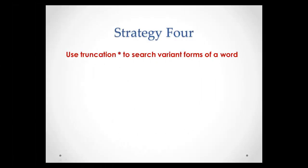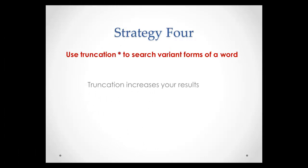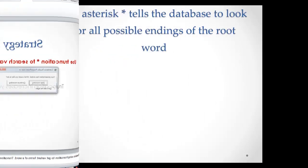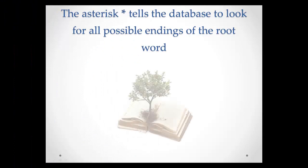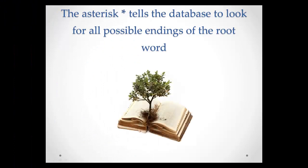Strategy 4 involves using truncation to get variant forms of a word. Truncation will help to increase your results. Most databases will use the asterisk to indicate truncation. Placing the asterisk at the end of the root word will allow you to search for all possible endings for the word.